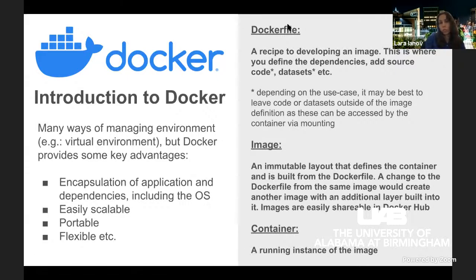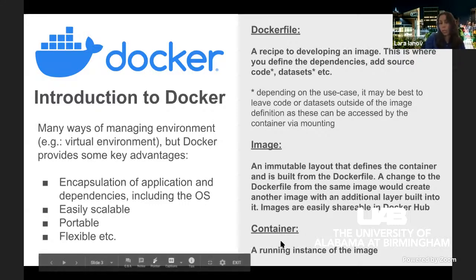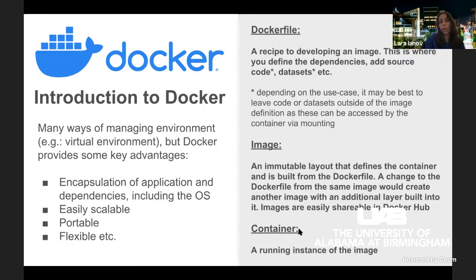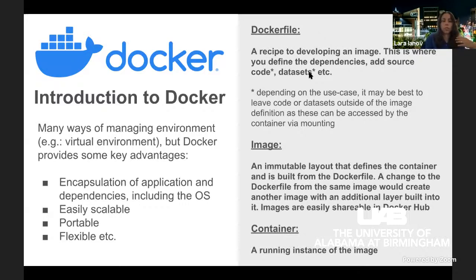Before jumping into the materials, let me clarify some terminology: Dockerfile, image, and container. These are all linked. A container depends on an image; an image depends on a Dockerfile. The Dockerfile is a recipe for building an image — this is where you define dependencies, and optionally add source code or datasets. Whether to include source code and data depends on the goal: sharing just an environment, or sharing a complete analysis.